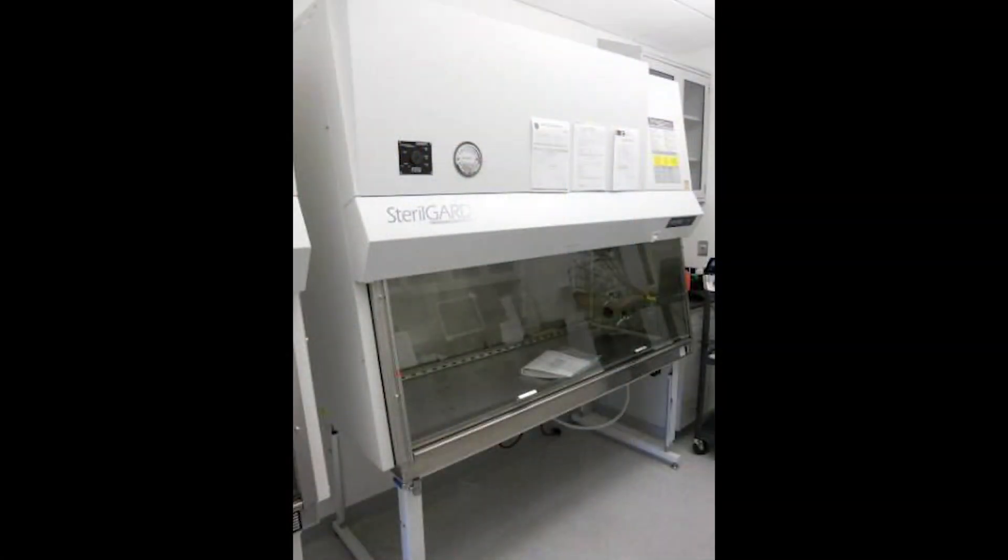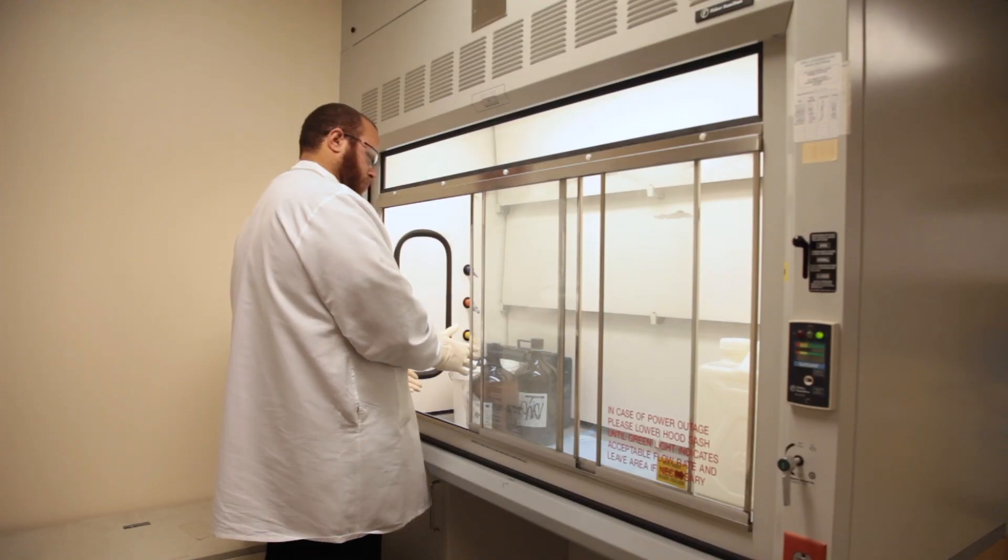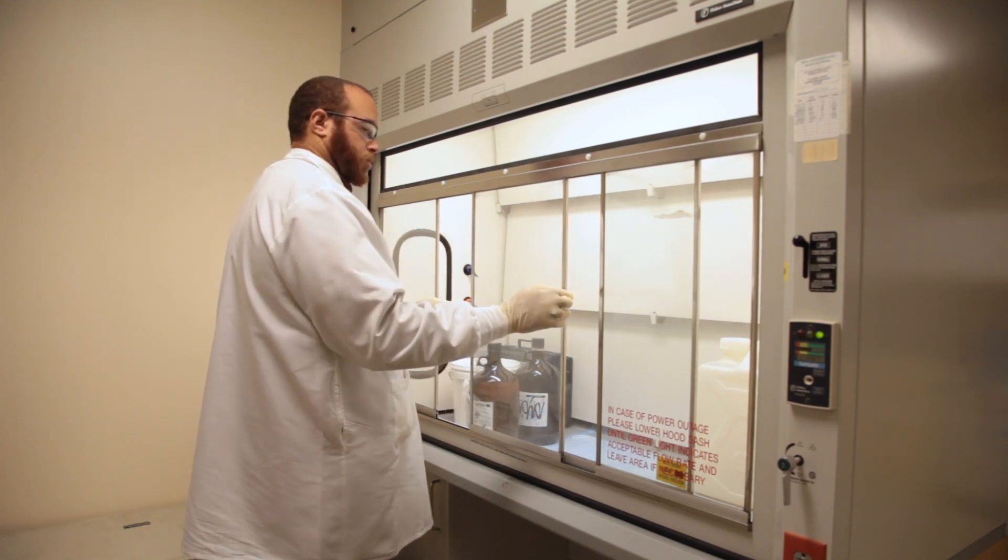These include biosafety cabinets, laminar flow hoods, animal changing stations, and sterile workstations. Laboratory fume hoods are typically three-sided enclosures with an adjustable clear sliding window or sash.